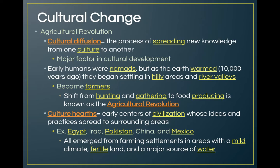Very early centers of civilization became what are called culture hearths — places where ideas are created and then spread to surrounding areas through cultural diffusion. Examples include Egypt, Mesopotamia in Iraq, Pakistan, China, and Mexico. All of these emerged from farming settlements in areas with mild climate, fertile land, and a major source of water. In Egypt, Iraq, Pakistan, and China, that water source was a river; in Mexico, it was a lake.